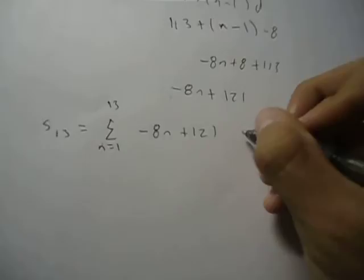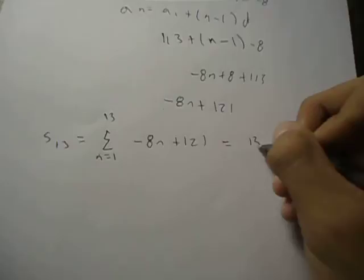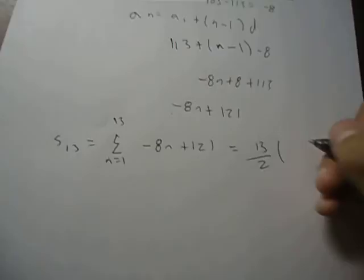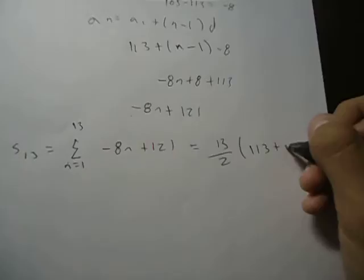And now we set that equal to the other part, which would be 13 over 2, because that's n over 2, times a_1, which is 113, plus a_n, which would be 17 in this case.